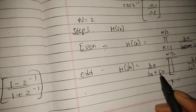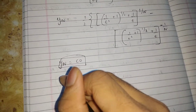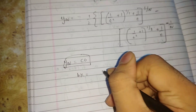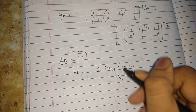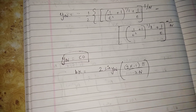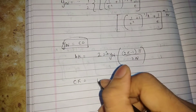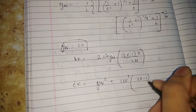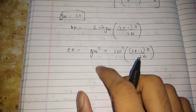Once you have y_n, which equals c_0, calculate b_k using the formula: b_k = 2·sin[(2k−1)π / (2n)]. Then calculate c_k using: c_k = y_n² + cos²[(2k−1)π / (2n)]. Remember this formula for c_k.